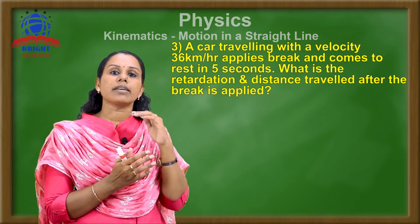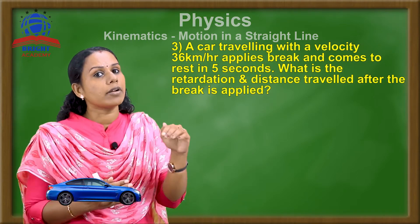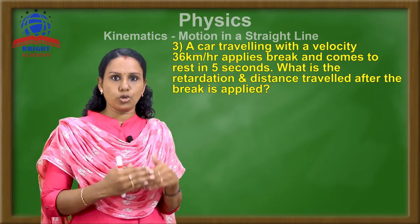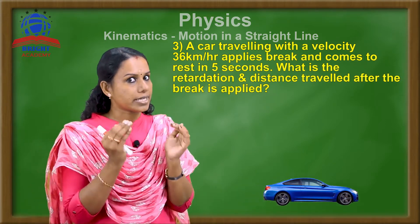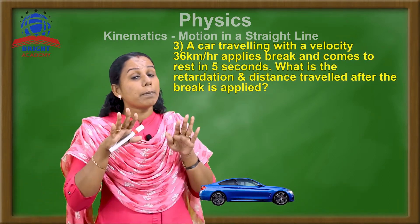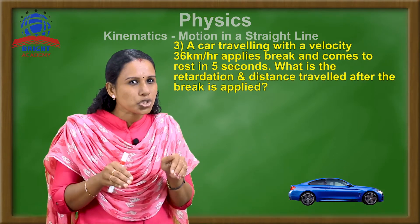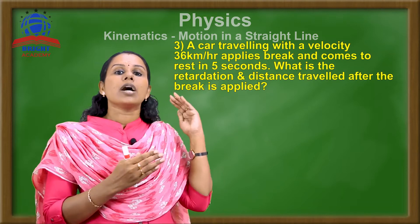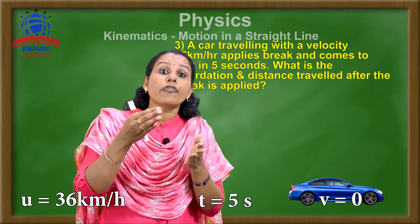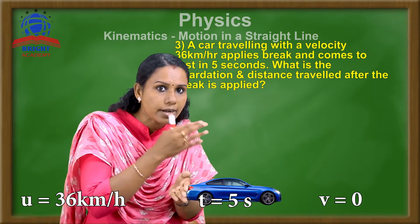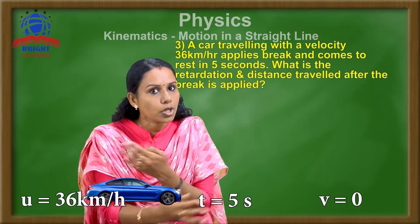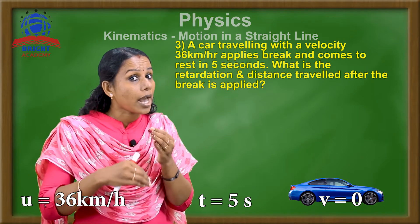Question 3: A car is traveling with a velocity of 36 km per hour. The driver applies the brake and it comes to rest in 5 seconds. What is the retardation? And what is the distance traveled after the brake is applied? When the brake is applied, the car decelerates and comes to rest.